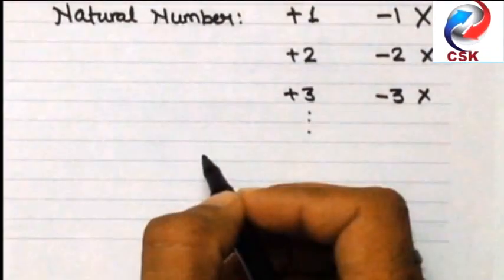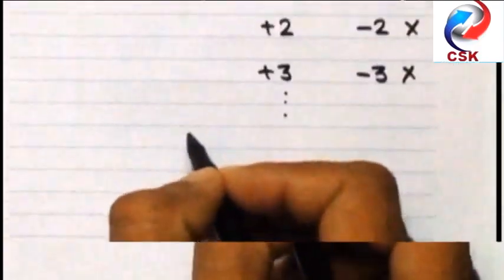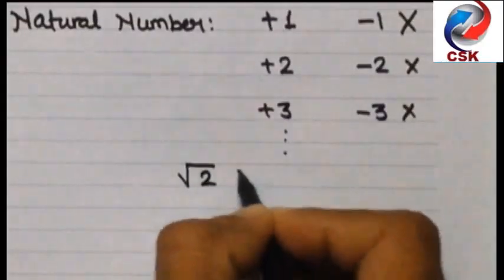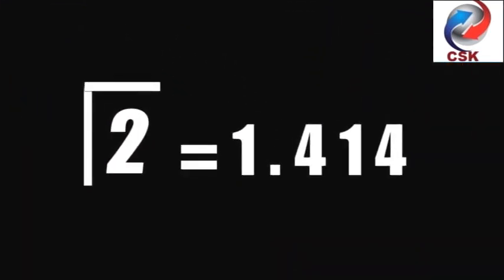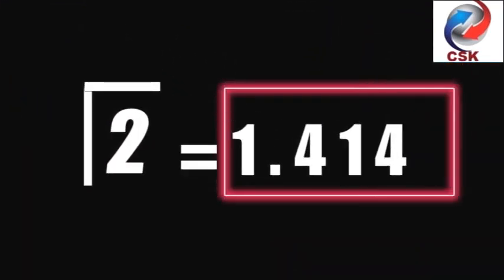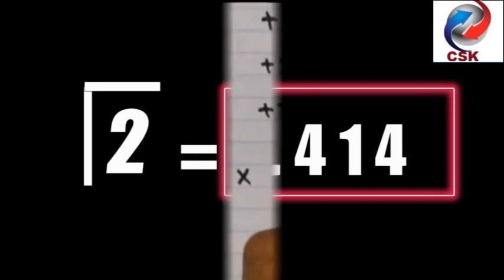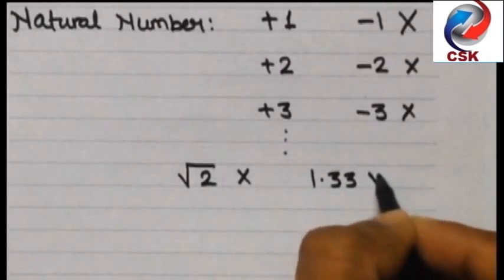Now let's consider an example root 2. Root 2 is equal to 1.414. Though it is positive, but this is not integer. So 1.414 or root 2 cannot be a natural number.